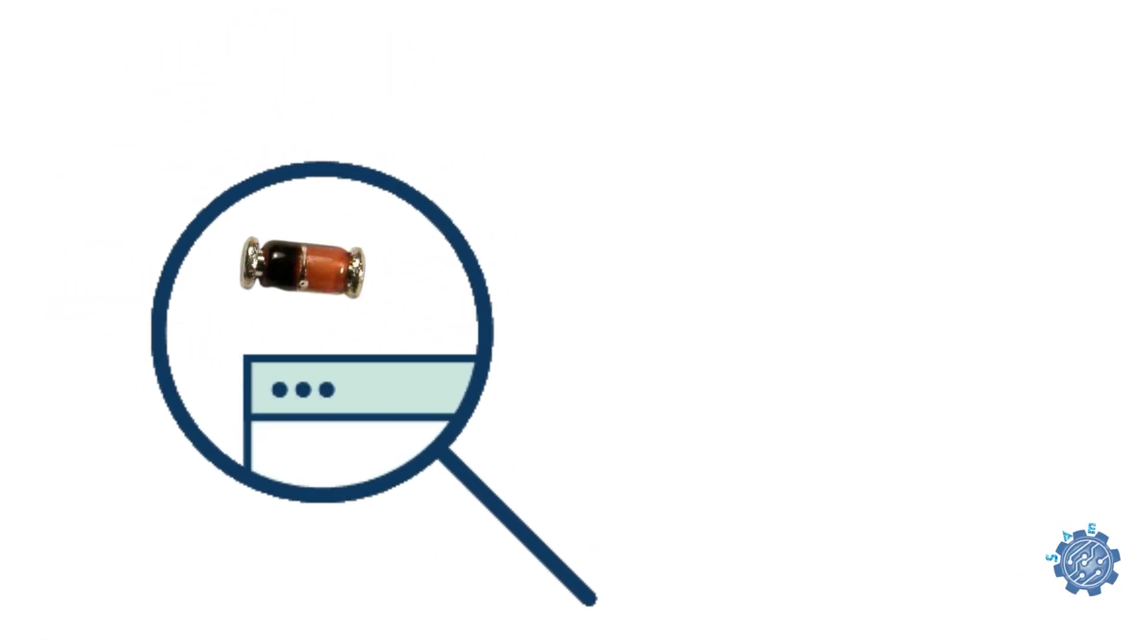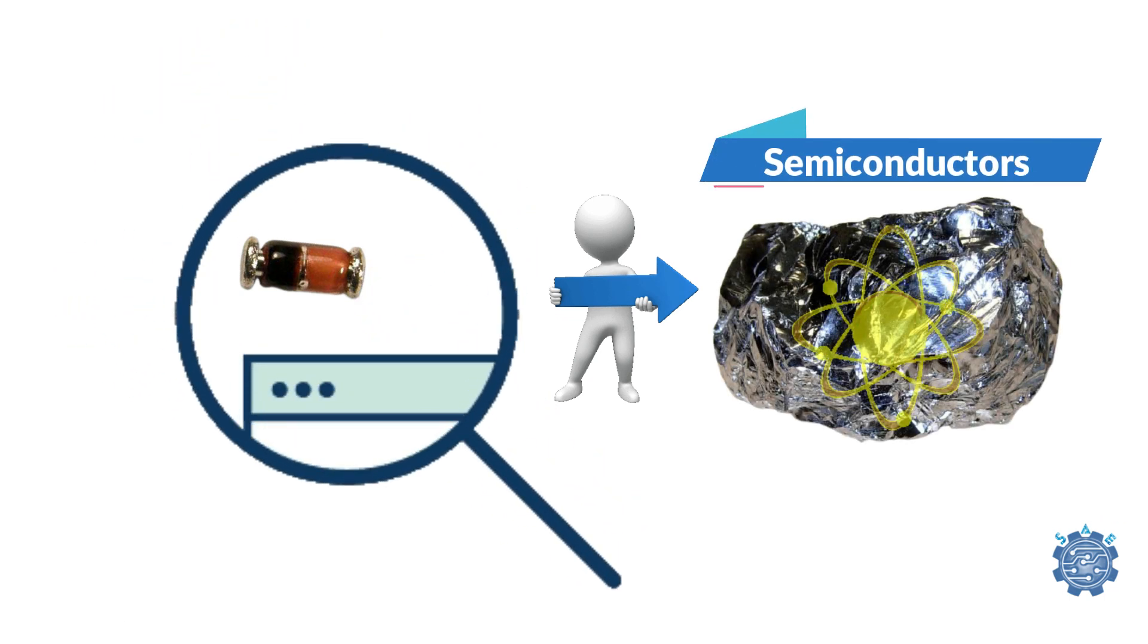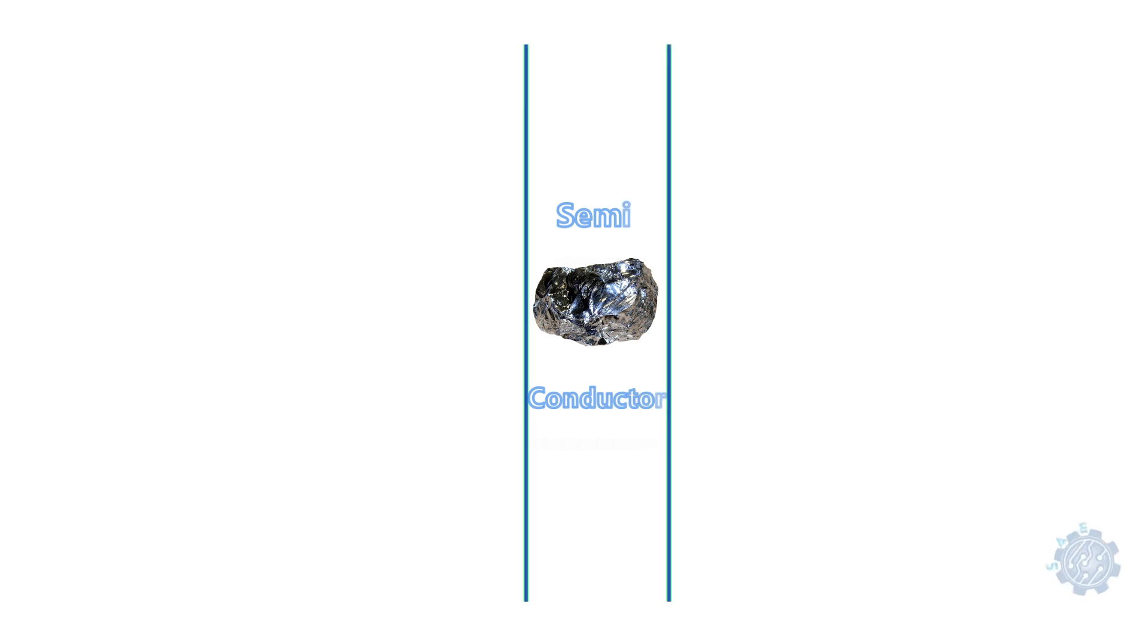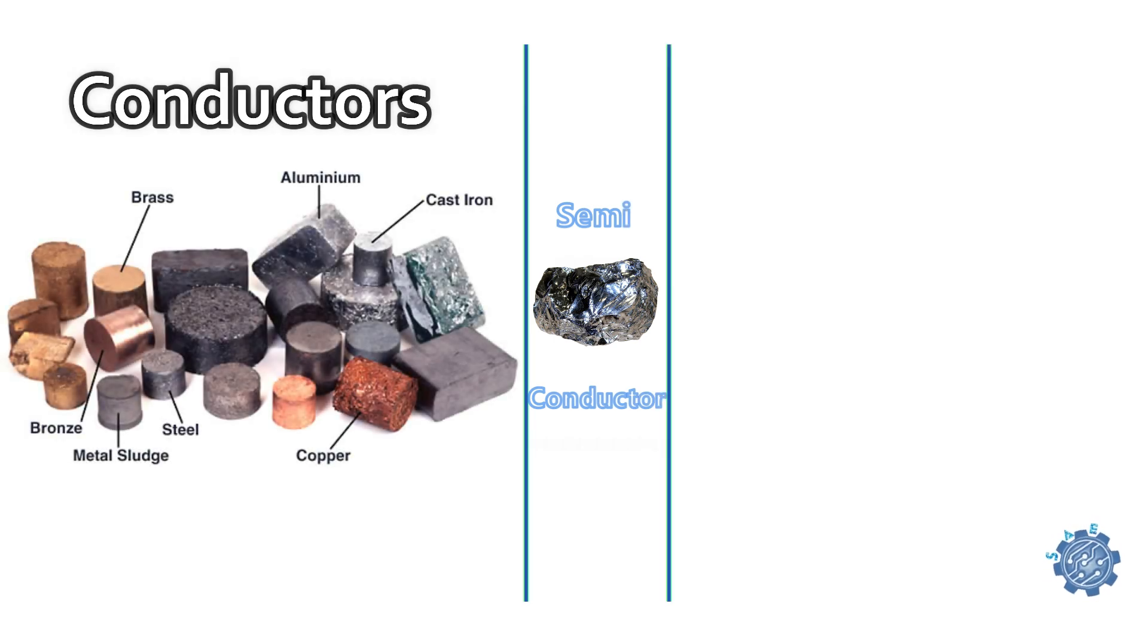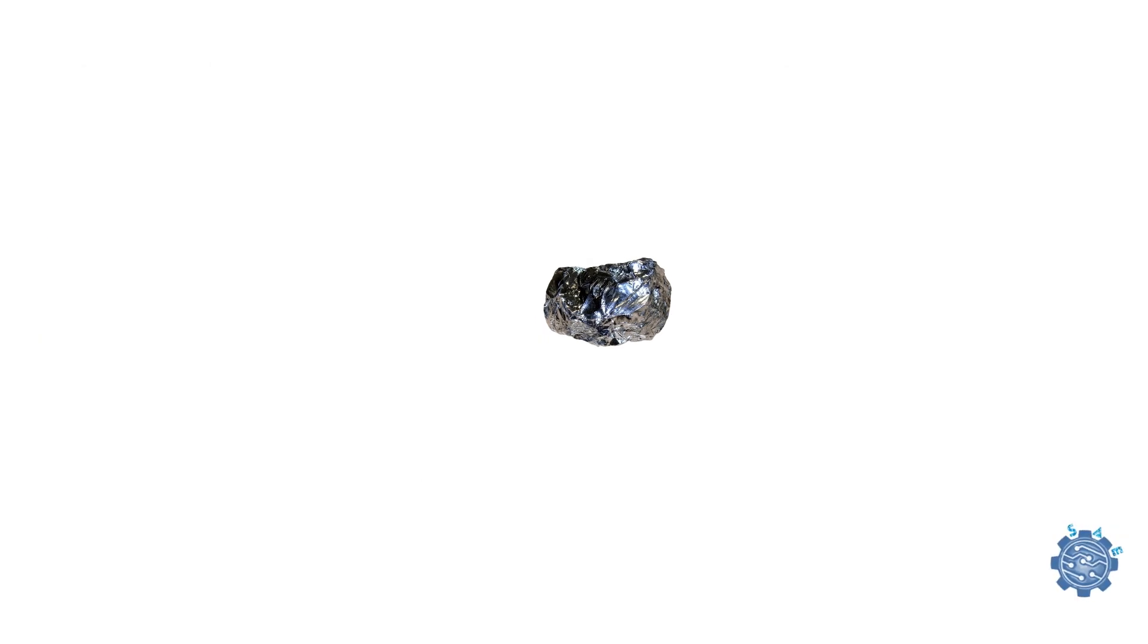For a better understanding of diodes, let's make a small introduction into semiconductors. As the name suggests, semiconductors are in between materials that conduct electricity and materials that are totally non-conductive. The most commonly used semiconductor material in electronics industry is silicon.